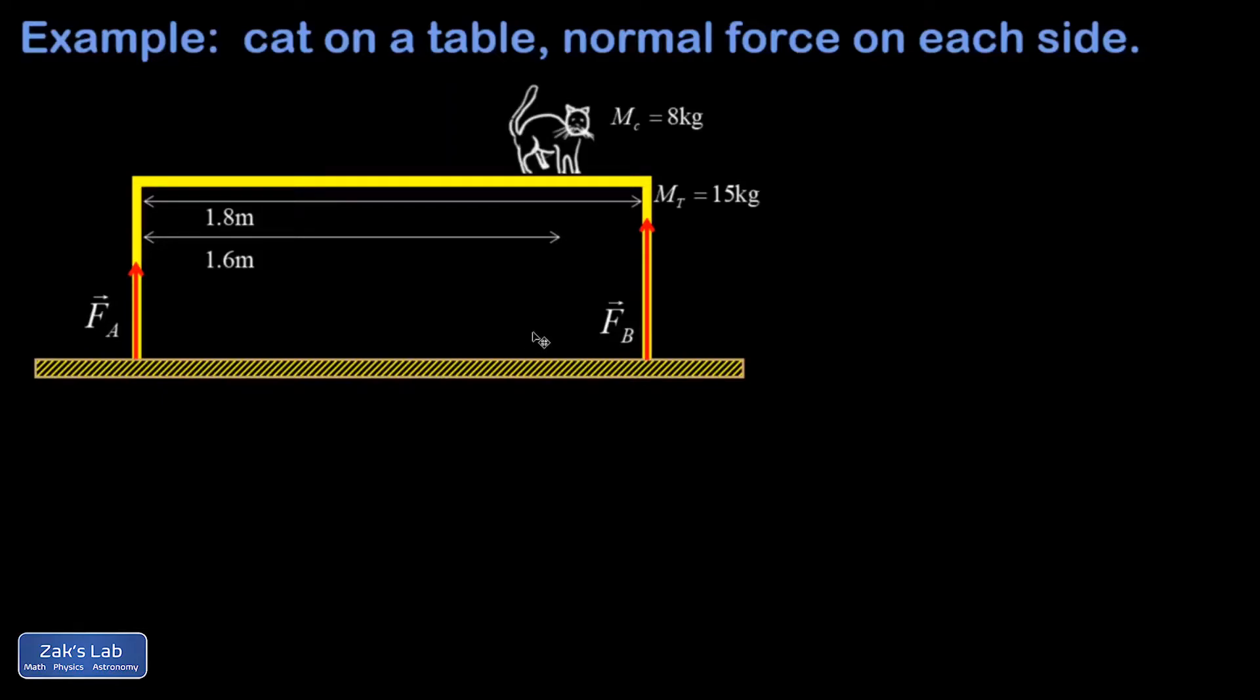In this problem, we're trying to find the force upward on each side of a table, and we're given the mass of the table and the length of it, and we have also the location of a cat that is not standing at the center, so I think that's going to make it so the force exerted upward on the right-hand side is greater than on the left-hand side.